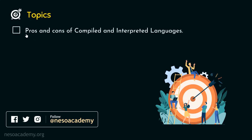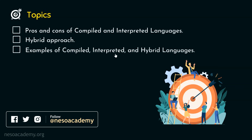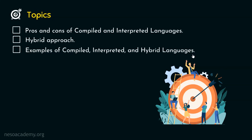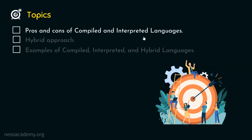The first topic is pros and cons of compiled and interpreted languages. The second topic is hybrid approach. And the third topic is examples of compiled, interpreted and hybrid languages. We'll discuss all these topics one by one. First, we will discuss the advantages and disadvantages of compiled and interpreted languages.